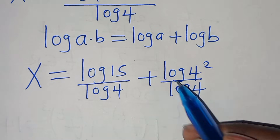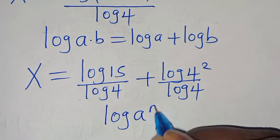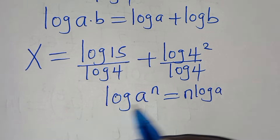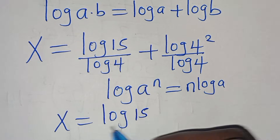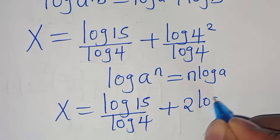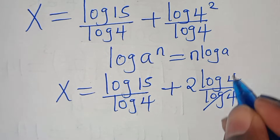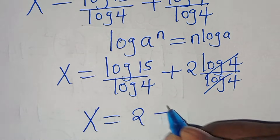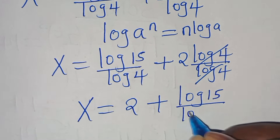Applying this logarithm property, we have x equals log 15 divided by log 4, then plus log of 4 to the power of 2 divided by log 4. Now, log of 4 to the power of 2 — applying the power rule property, that is log a to the power of n equals n times log a — gives us x equals log 15 divided by log 4, then plus 2 times log 4 divided by log 4. So log 4 and log 4 simplify, giving us x equals 2 plus log 15 divided by log 4.